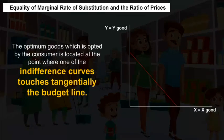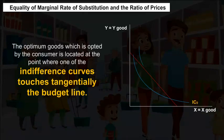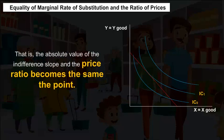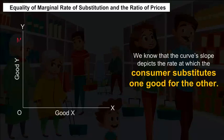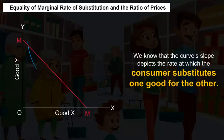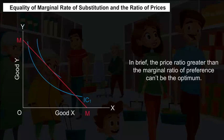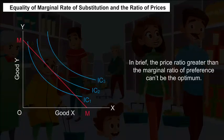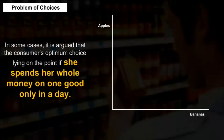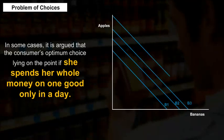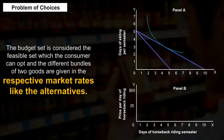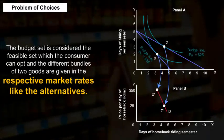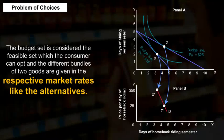Equality of marginal rate of substitution and the ratio of prices: The optimum bundle chosen by the consumer is located at the point where an indifference curve touches the budget line tangentially — that is, where the absolute value of the indifference curve's slope equals the price ratio. The price ratio greater than the marginal rate of preference cannot be the optimum. In some cases, the consumer's optimum choice lies at the point where she spends her whole income on one good. The budget set is the feasible set of alternatives.